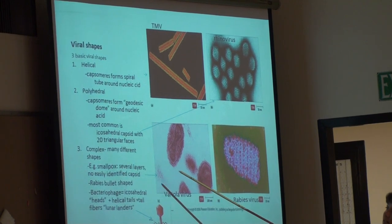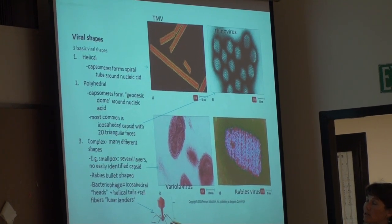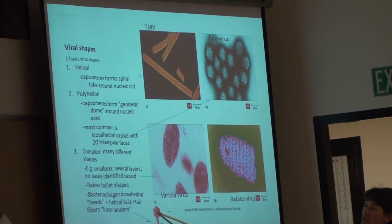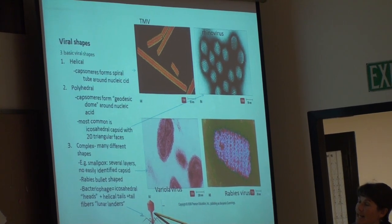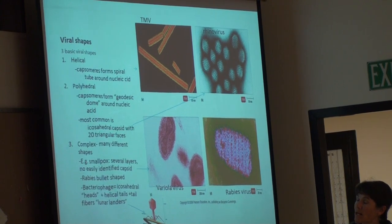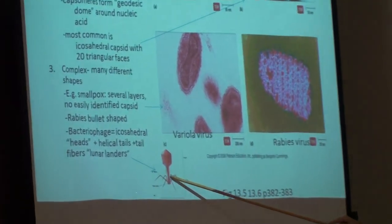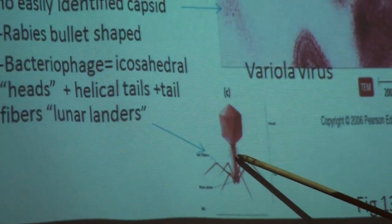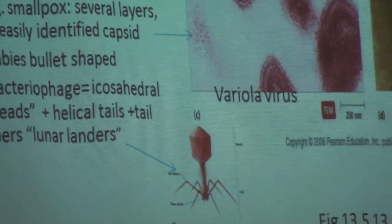Complex viruses — an example we'll talk about are the bacteriophages, bacterial viruses. The capsid or head protects the genetic information. In addition, they have very elegant tails used to attach to the surface of bacteria. This portion of the tail acts as a hypodermic syringe: it's through this hollow protein tube that the genetic information will be injected into the bacterium.